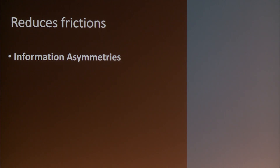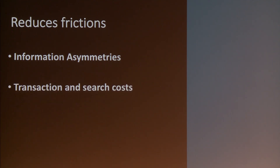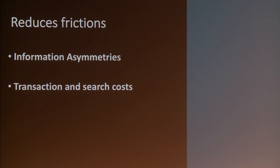If we do have a shared distributed ledger, then some of these information asymmetries can be addressed. The second thing is search and transaction costs. Usually these are considered a minority of the entirety of an equation, but it turns out there are entire industries that can be opened up if you can address some of these transaction and search costs.